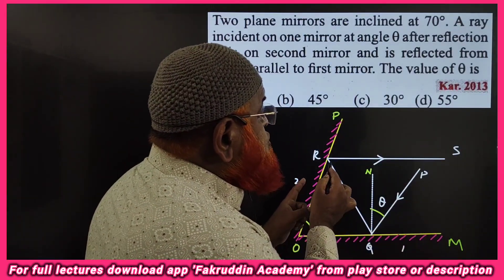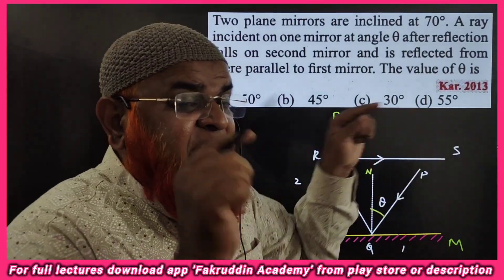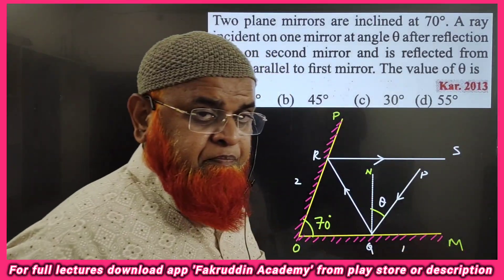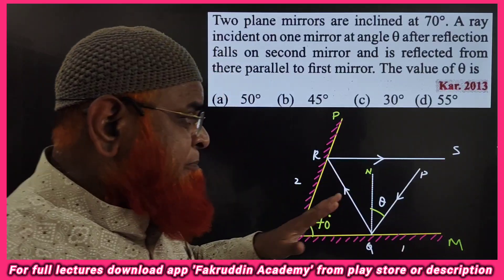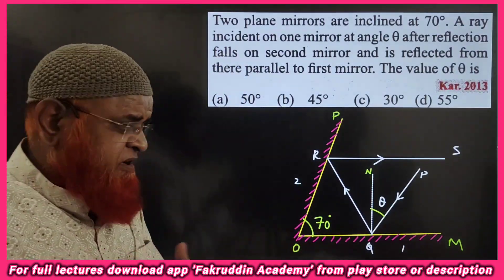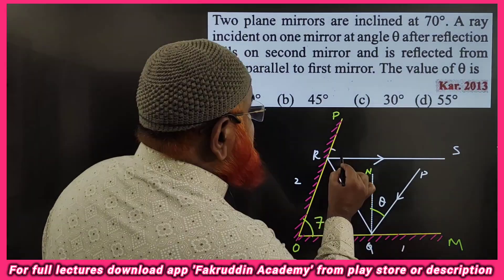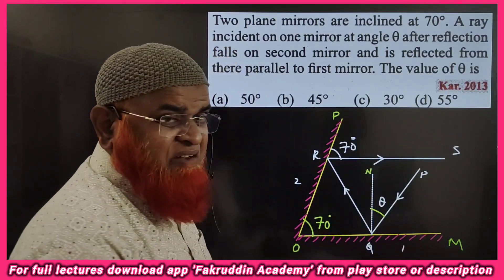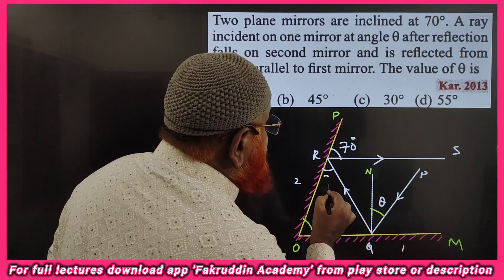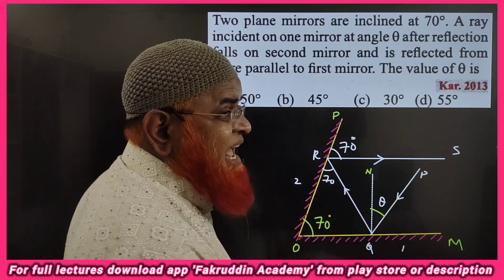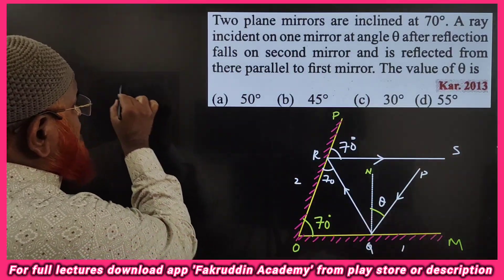After taking two reflections, the outgoing ray RS is parallel to OM — that is what the question is asking. Since these two are parallel, the corresponding angles are equal. This angle is given as 70 degrees, so this angle is also 70 degrees. These are called glancing angles, and they are the same.